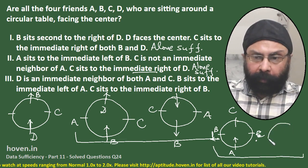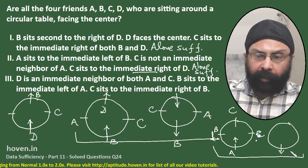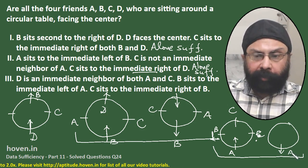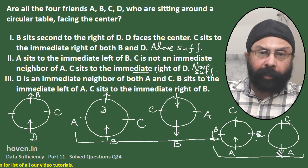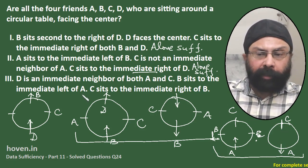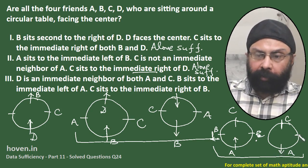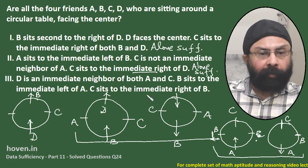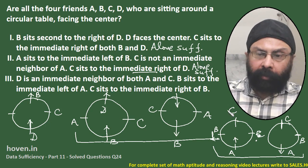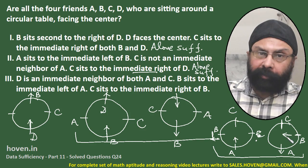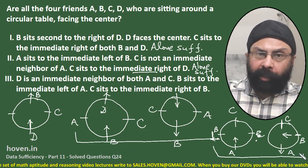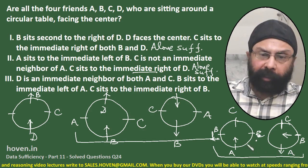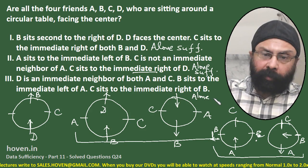Sub-case 2: Assume A is facing outside. C is still located opposite to A. B sits to the immediate left of A, so B comes at the corresponding position. C sits to the immediate right of B — for this to hold, B must face inside. In both sub-cases, not all friends face the center, so Statement 3 alone is also sufficient.